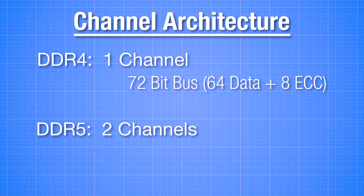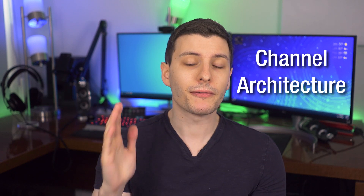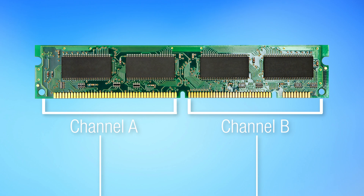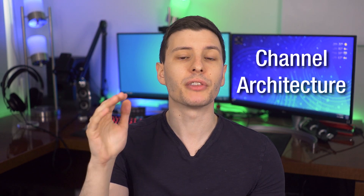With DDR5, each RAM module or stick has two channels. Each of those channels is a 40-bit bus, meaning 32 bits of data pins and 8 for error correcting pins. So effectively it's the same amount of data pins between DDR4 and DDR5 on each stick — 64 for both. However, with DDR5 you're going to have two channels instead of just one. DDR4 already does support multiple channels, but with DDR5 you can have two channels on each individual stick, meaning the CPU can access two different pieces of data simultaneously. Each individual RAM stick should be a lot more efficient, and we should be able to get a lot more potential channels in DDR5.